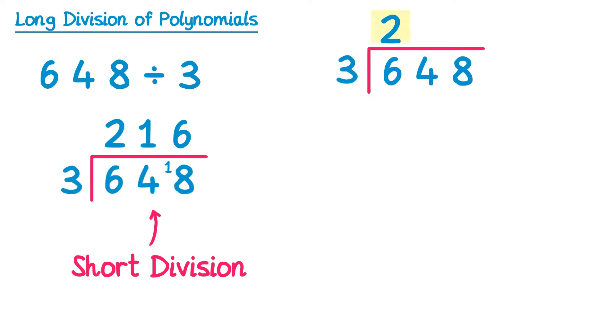We multiply this 2 back by the 3 and then write this underneath the first digit, so 2 times 3 is 6. We then subtract those two digits in that column, so 6 take away 6 which gets you 0. You then look at the next digit in your number, so the 4, and bring that down and then read this number as 04, which is 4.